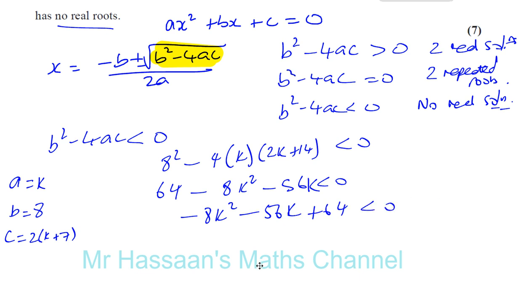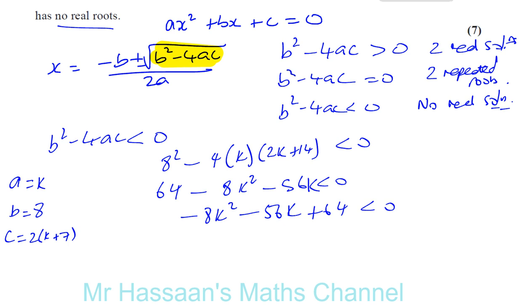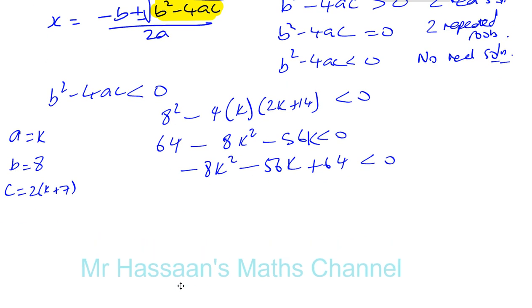So now that's the inequality we have to solve. So now what we can do here is we don't like the k squared to be a negative term. So we can divide by negative 8, that gets rid of the factor and it also gets rid of this being negative. But when we multiply or divide by a negative number, we must change the sign of the inequality.